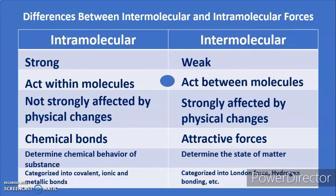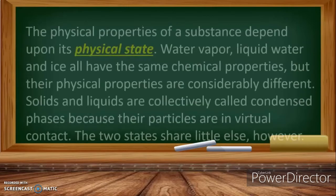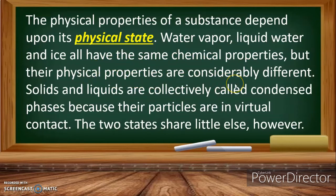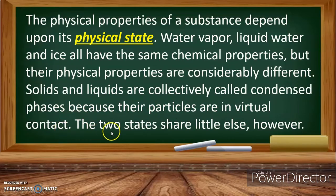The physical properties of a substance depend upon its physical state. Water vapor, liquid water, and ice all have the same chemical properties, but their physical properties are considerably different. Liquids and solids are collectively called condensed phases because their particles are in virtual contact, though the two states share little else.